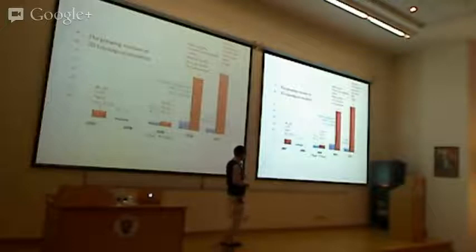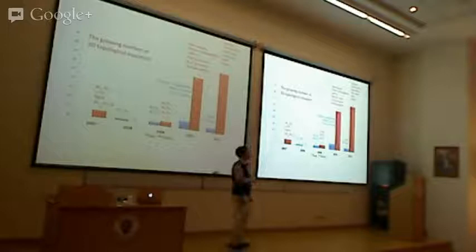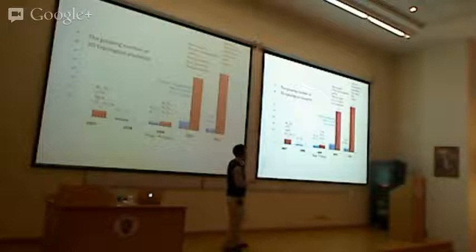This is a booming research field. The red bars show theoretically predicted topological insulators and the blue ones are experimentally confirmed. Two things are clear: this is growing exponentially, and theory is leading the field — theorists are always predicting something and experimenters are trying to confirm these predictions.